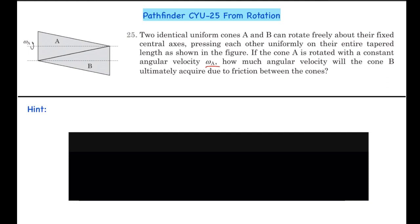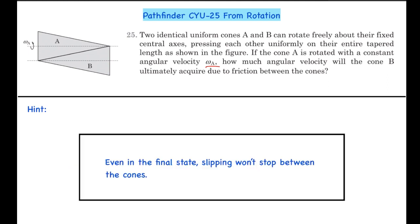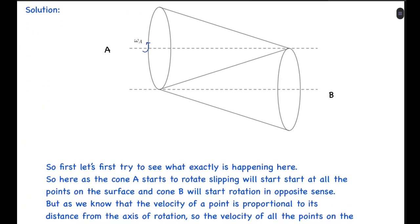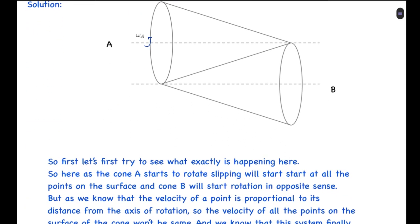The hint is that even in the final state, slipping won't stop between the cones. Now let's look at the solution. As cone A starts to rotate, slipping will start at all the points on the surface and cone B will start rotation in the opposite sense.